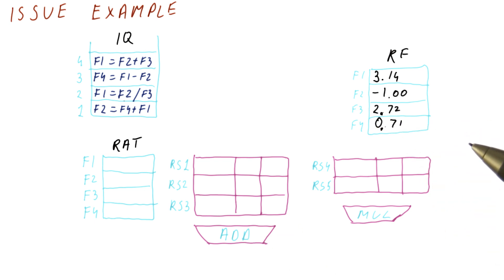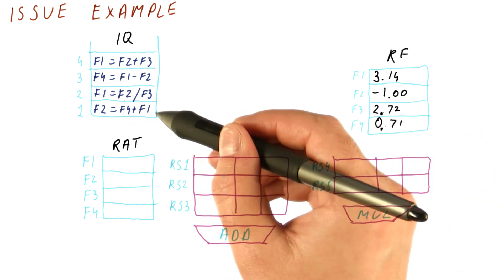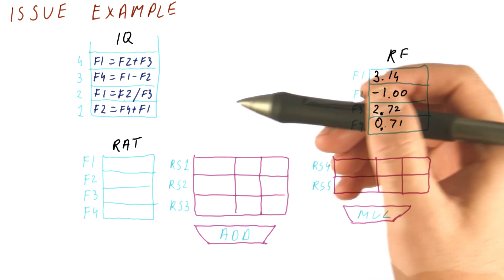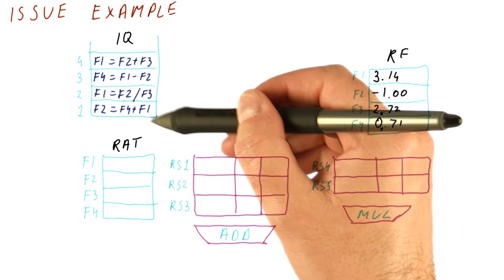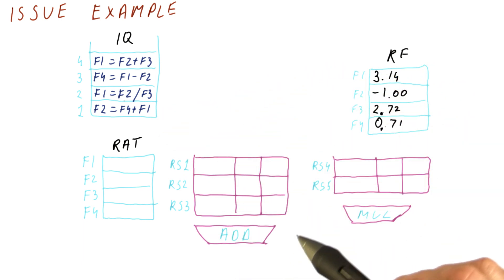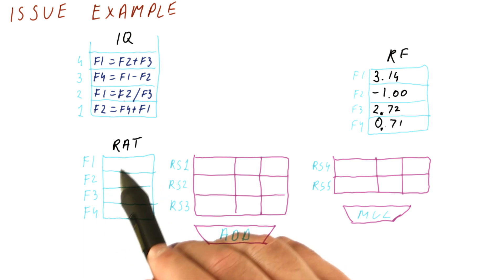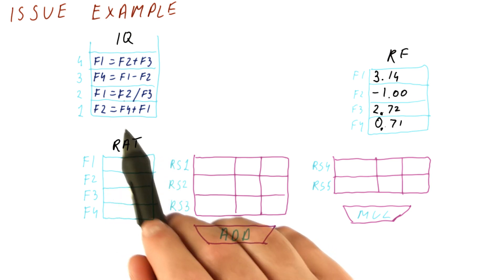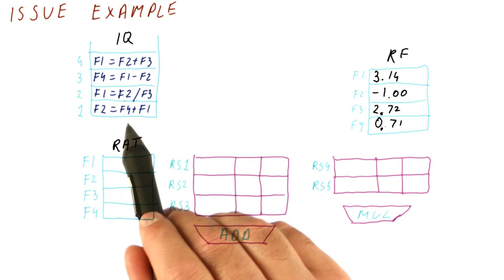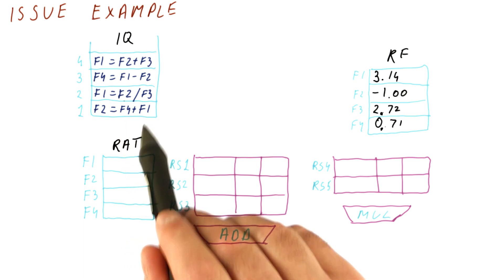Now we are ready to actually issue an instruction. So again, this is going to be the first one we issue. The first step is to take it from the instruction buffer. The next step is to look at the RAT and find whether our inputs are ready or not. And in this case, both of the inputs are ready. F1 and F4 are both available.